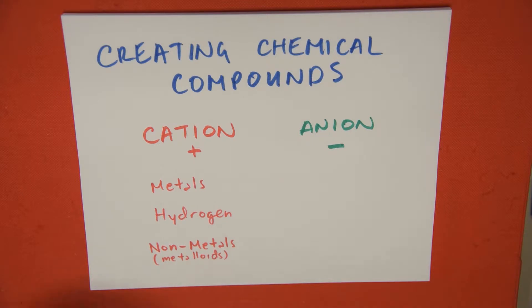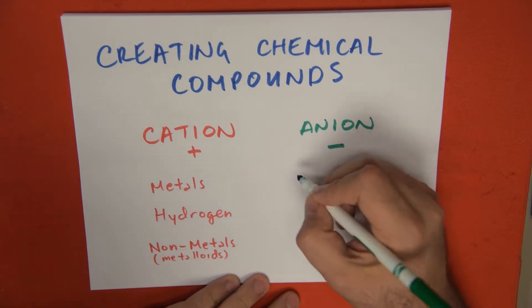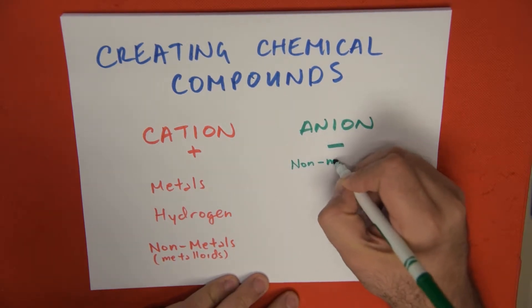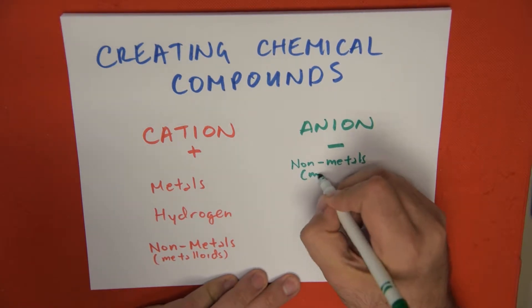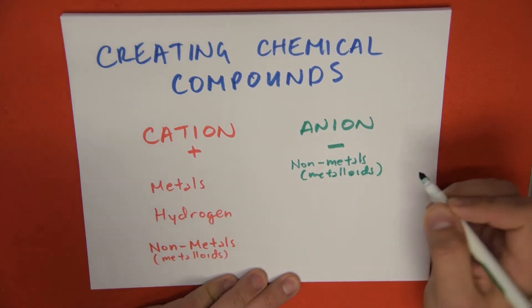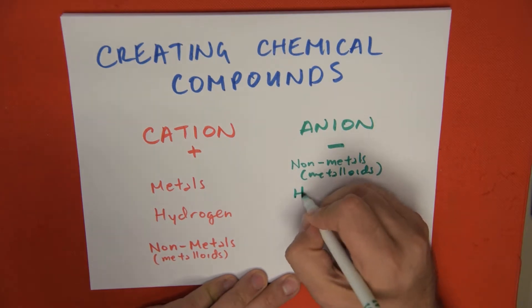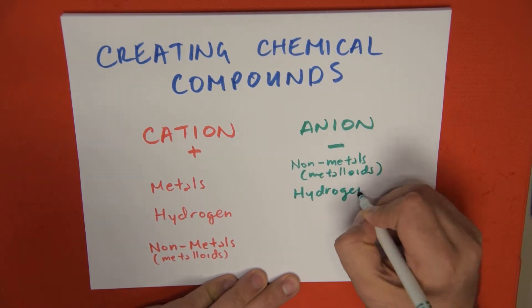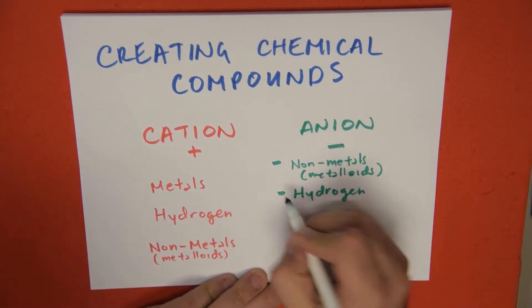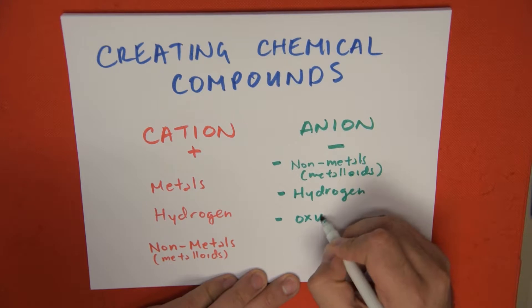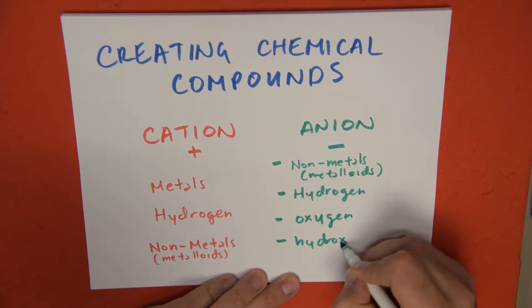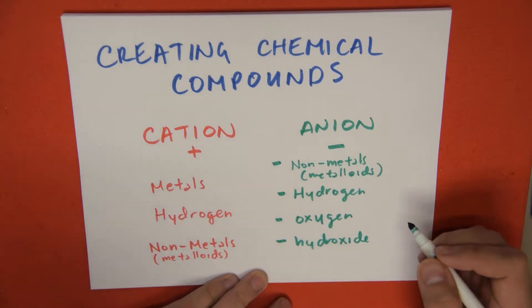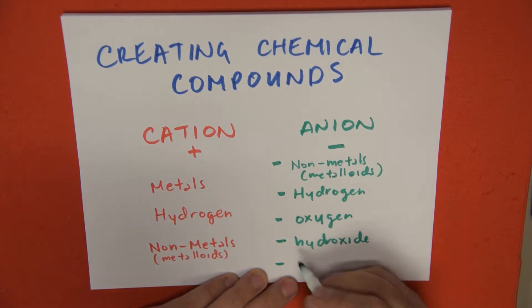In the case of anions, there are many types of anions, but today we're going to be talking about five specific anions. The first type of anion we're going to be speaking about is non-metals, which also includes metalloids. We can also use hydrogen as an anion with its negative charge. We can also use oxygen. We could use hydroxide, which is a polyatomic anion. And, last but not least, a specific type of anions which are called oxyanions, which I'll explain further on.